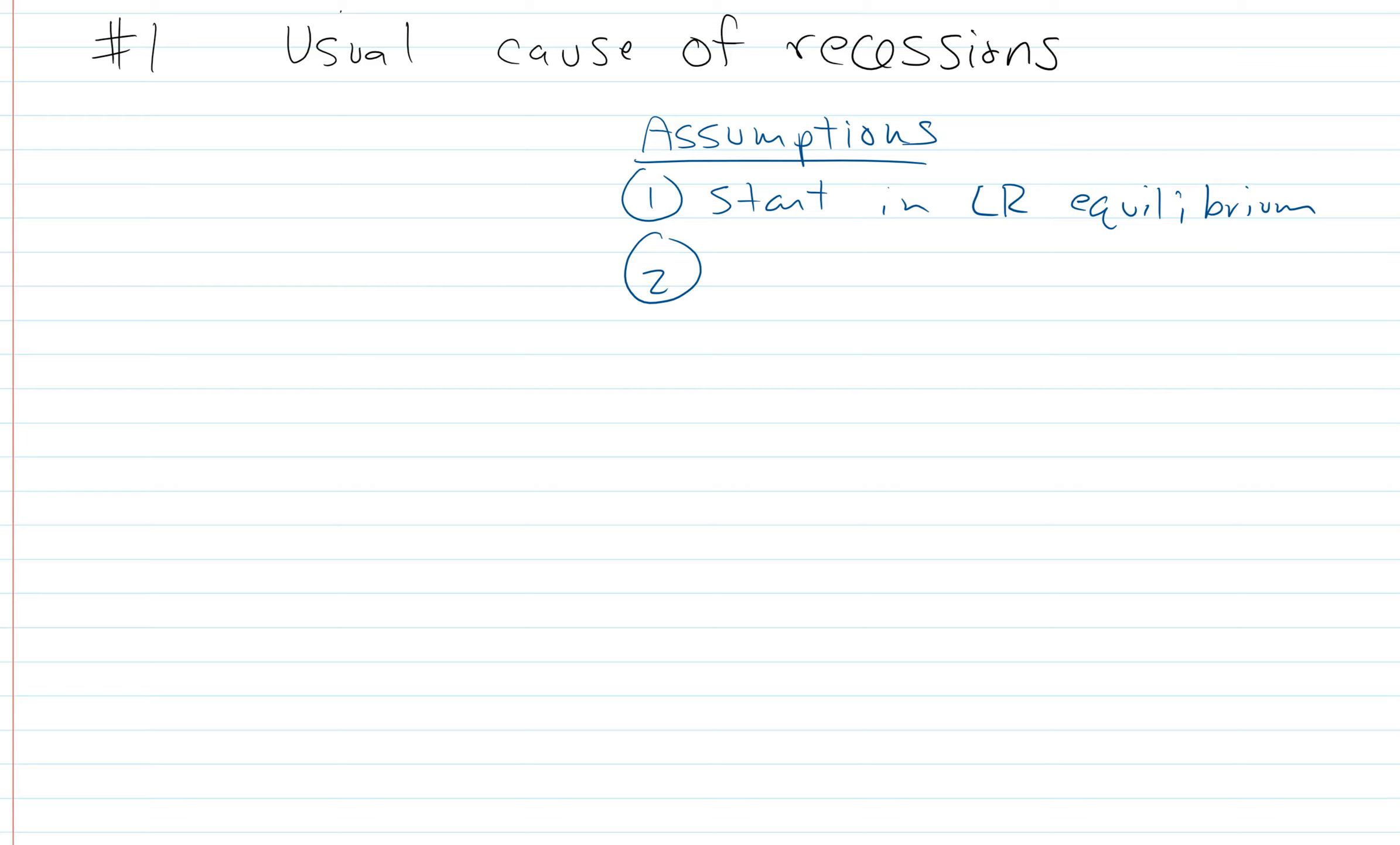The second assumption we're going to make is we're going to assume that the government takes no policy action. In the real world, at least since the Great Depression, governments take strong policy action most of the time when there's a recession. This will change what we'd actually observe, but for right now we're going to assume that they don't take this action, and then later on in this course we'll come back and talk about what actions they can take and how those actions will work.